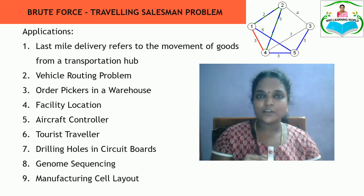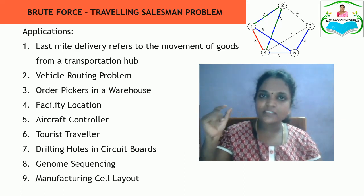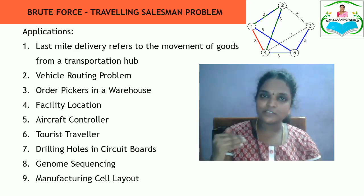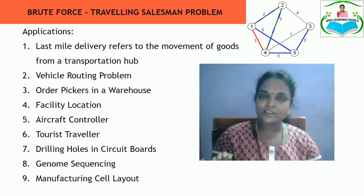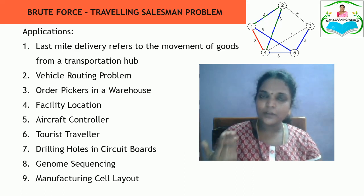For an aircraft controller, when traveling from source to destination via airways, the controller has to find the shortest available path. For a tourist traveler, when making a tour from your source to any other place, you travel the shortest distance, minimizing spending and passing through fewer intermediate cities.